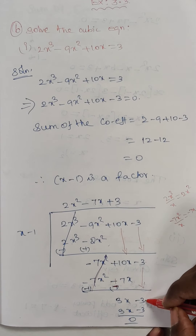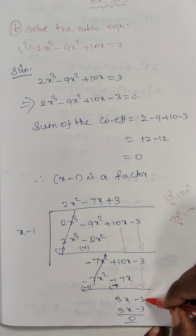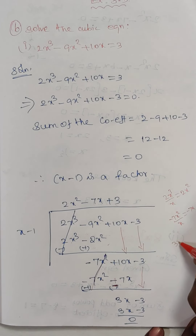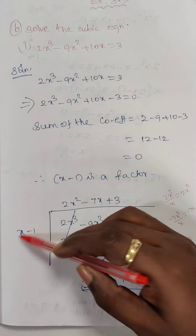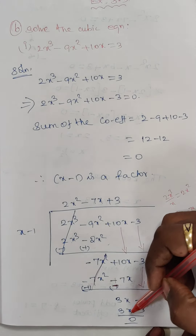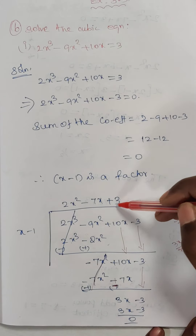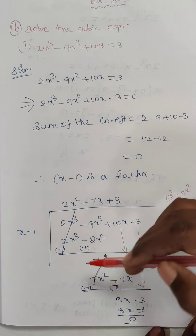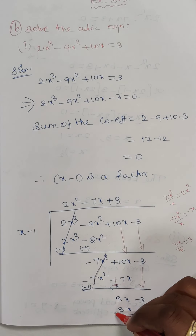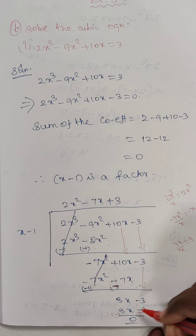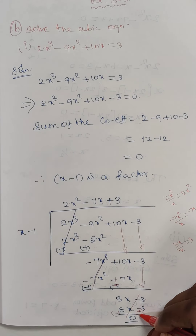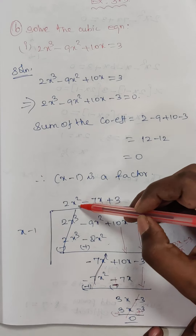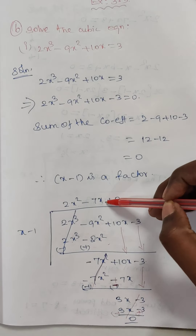Next, 3x divided by x equals 3. Then 3 times x gives 3x, and 3 times minus 1 gives minus 3. After changing signs, everything cancels to 0. The remaining quotient is 2x² minus 7x plus 3.